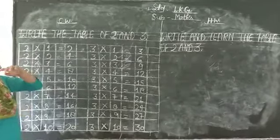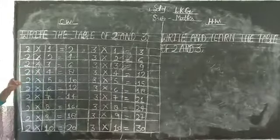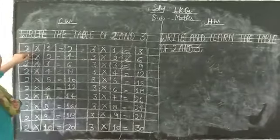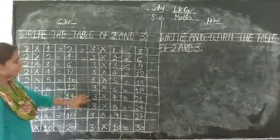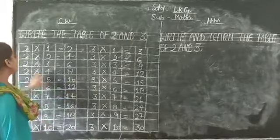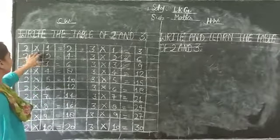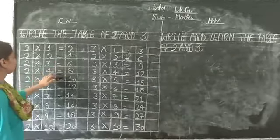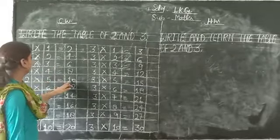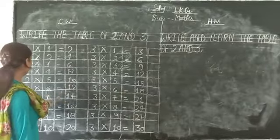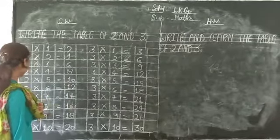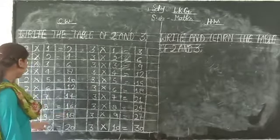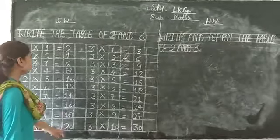I have the table here for you. 2 times 1 is 2, 2 times 2 is 4, 2 times 3 is 6, 2 times 4 is 8, 2 times 5 is 10, 2 times 6 is 12, 2 times 7 is 14, 2 times 8 is 16, 2 times 9 is 18, 2 times 10 is 20.